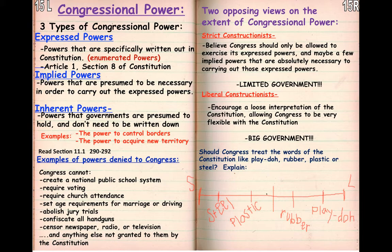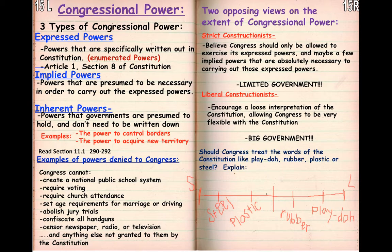Strict constructionists believe it should be very rigid and black and white, while liberal constructionists see it more as gray areas. Do not think that strict constructionists are automatically conservative-minded people or Republicans, and the same goes for liberal constructionists. Liberal just really means change or flexibility — it doesn't necessarily mean that liberal constructionists are Democrats. By this time, you should be done with notes from 15L all the way through 17R. Your next video is going to be over 18L and 18R, and after that you will take a quiz over the notes from 13R through 18R.